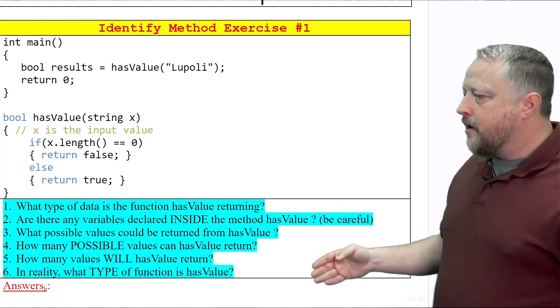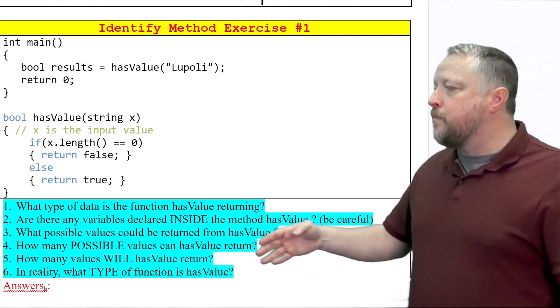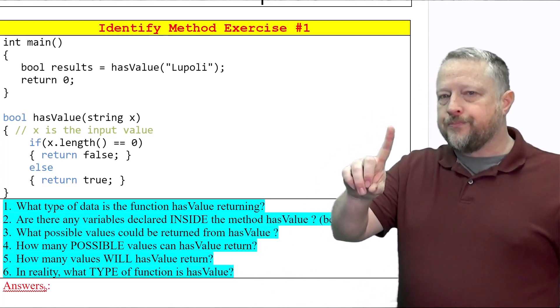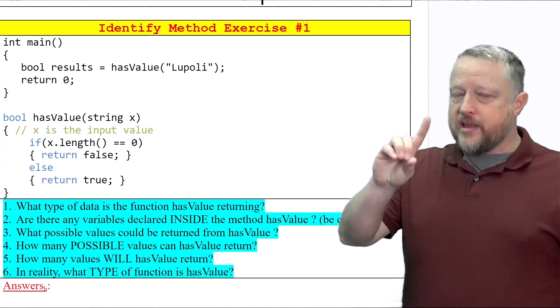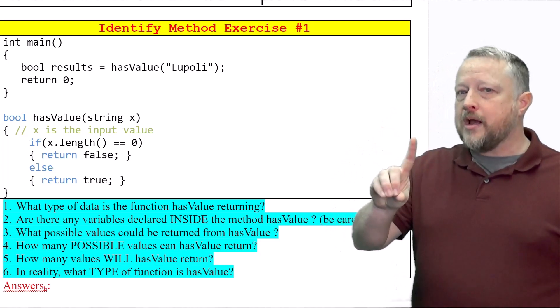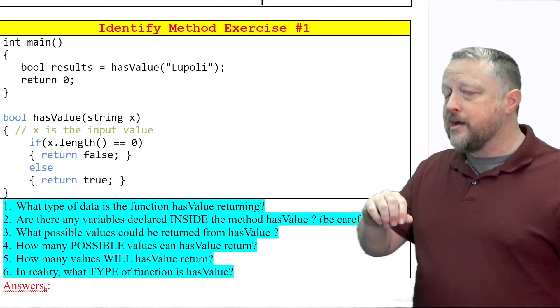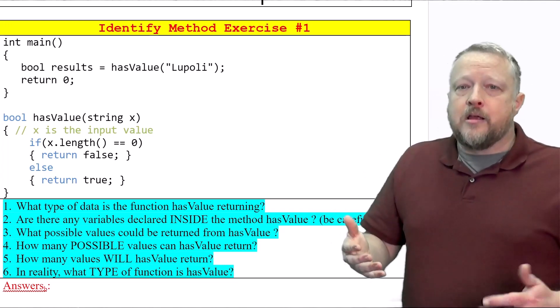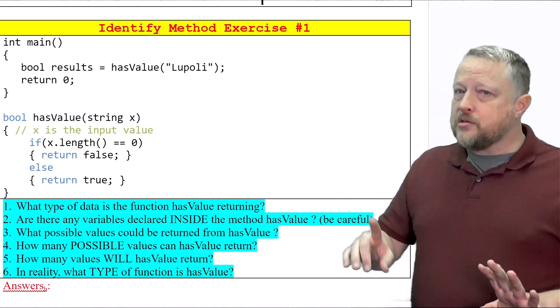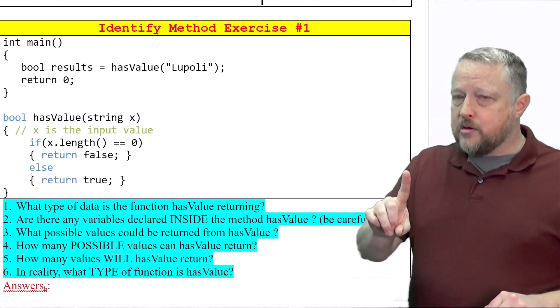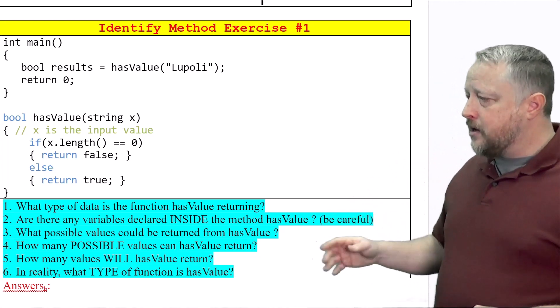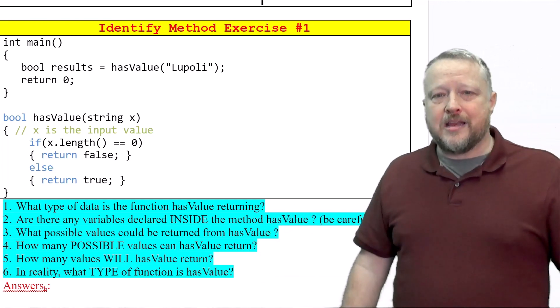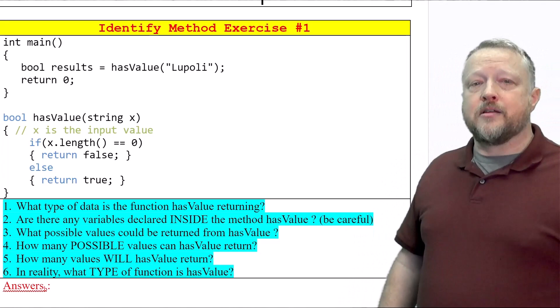How many values will hasValue return? That's one. By the way, that might be different than some other programming languages you've dealt with before. Like in Python, you can return multiple values in one line. Here in C++, it's just one and that's it. In reality, what type of function is hasValue? That is going to be a predicate function.